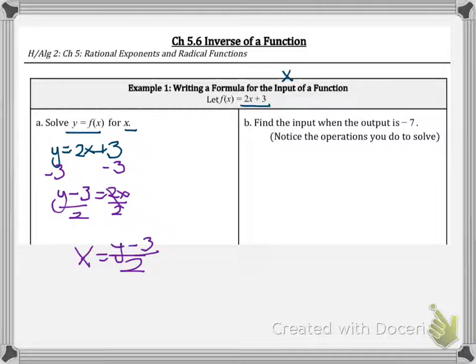So now we're going to find the input when the output is negative 7. Output means our y value. So let's plug it in to the original function. Oh, I'm sorry, into our inverse function. We have x equals negative 7 minus 3 over 2.